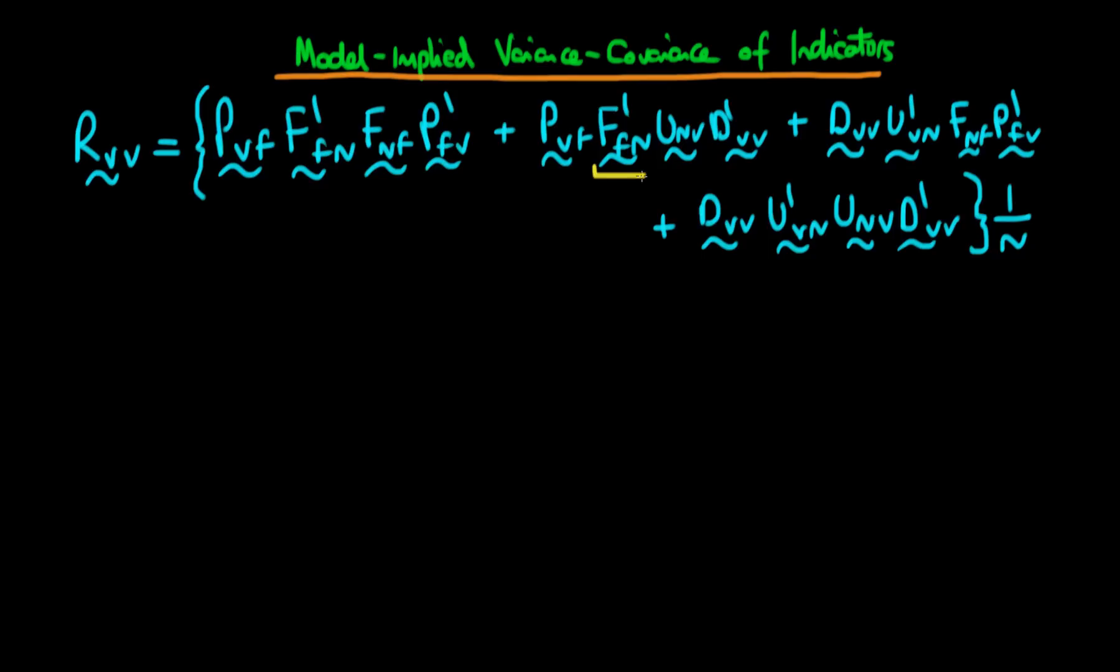First of all, what we do is we notice that this second expression here actually contains F transpose times U, which if we rewrite it is the same thing as F transposed with dimensions F by N times U N V. And what we do now is we realize that the unique factor scores, which is that which is contained within U, are defined to be completely independent of the factor scores. That's actually the definition of the unique factor scores. It represents the variance of variables which is not due to the common shared factors. So because of that, we know that this correlation between the two has to be equal to zero. Furthermore, we notice that we have a very similar expression in the third actual component of our variance covariance matrix, which is similarly going to be equal to zero because it's just the transpose of this original expression. So instantly, we can just remove this second and third expression from our variance covariance expression.